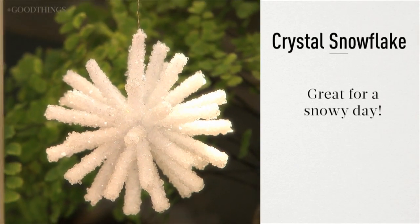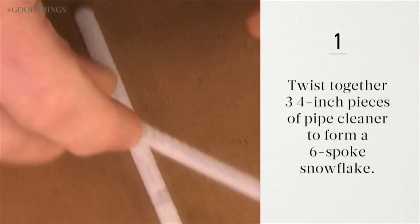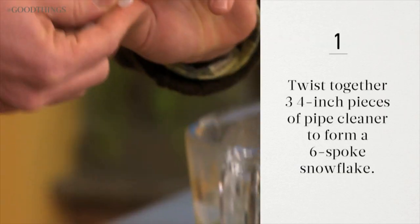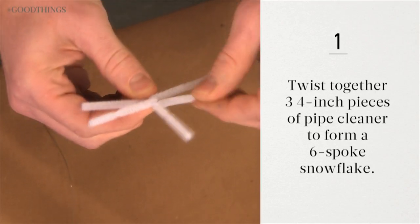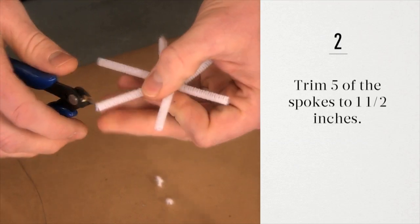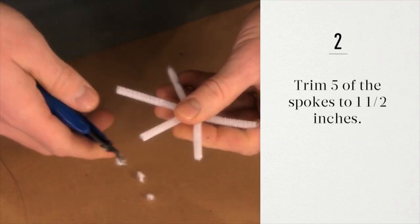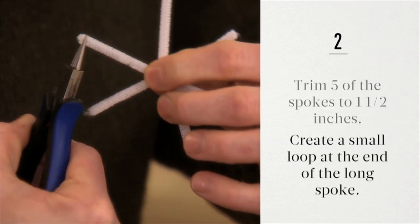This scientific craft is great for a snowy day. Layer three 4-inch pieces of pipe cleaner over one another to form a 6-spoke snowflake. Twist together in the center and trim five of the points to about 1.5 inches. With small pliers, create a small loop at the end of the long spoke.